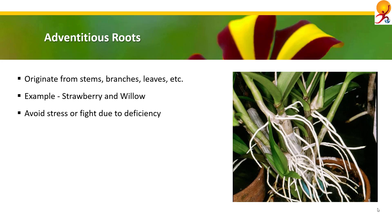This ability of plants to form adventitious roots is utilized in commercial propagation by cuttings. Understanding of the physiological mechanisms behind adventitious rooting has allowed progress in improving the rooting of cuttings by the application of synthetic auxins as rooting powders and by the use of selective basal wounding. Adventitious roots develop near the existing vascular tissue so that they can connect to the xylem and phloem.